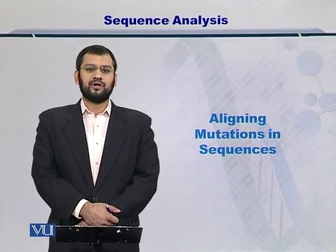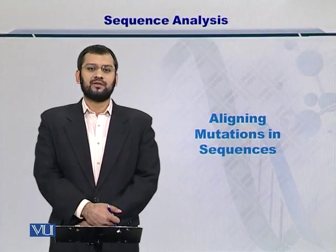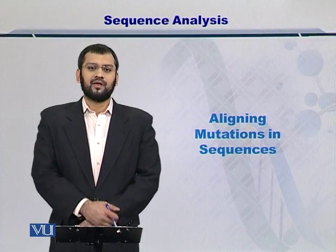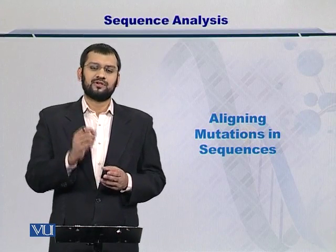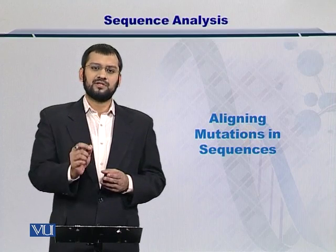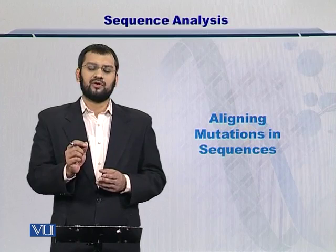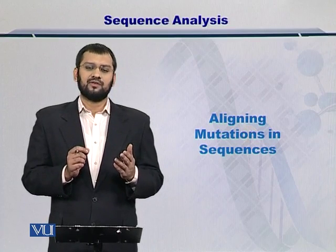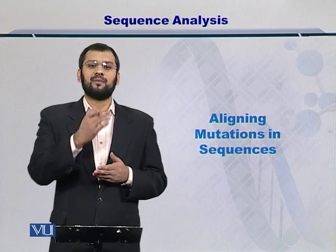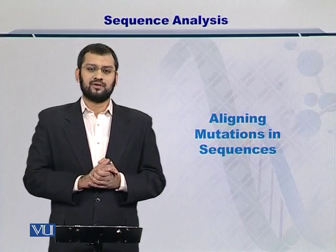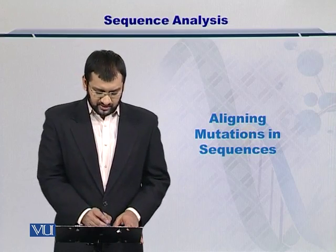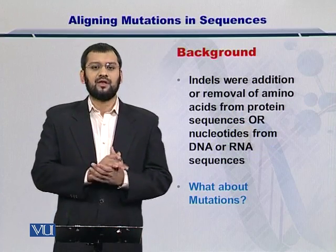Dear students, as you already know, there are three sources of variations in biological sequences. The first one is the insertion of a nucleotide or amino acid. The second is the deletion of a nucleotide or amino acid, and the third case is the substitution of an amino acid or nucleotide with some other amino acid or nucleotide. Such substitution is called mutation, and we are going to discuss this in this module.